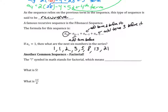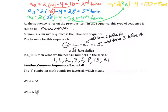We'll come back to factorials next class. Tonight's homework comes from worksheet number two on Canvas. Skip problems 21, 23, 25, and 27 — we'll come back to those. Please do problems 1, 3, 9, 13, and 15.